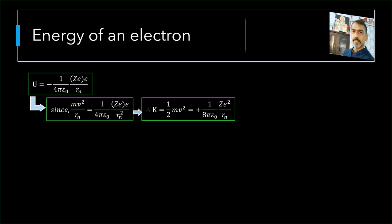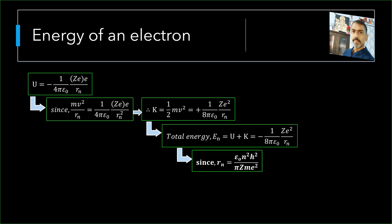The sum of potential energy and kinetic energy gives the total energy, that is equal to minus 1 by 8π epsilon naught into ze square by rn. Substituting value of rn obtained earlier, that is epsilon naught n square h square by πzme square, we get total energy En equals to minus z square e to the power 4 m by 8 epsilon naught square n square h square.